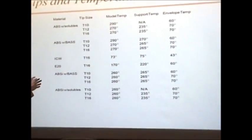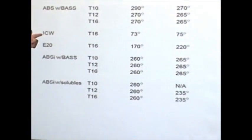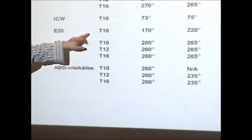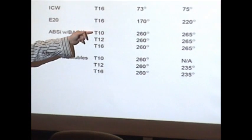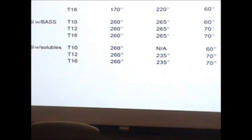And then you can actually kind of see, for the wax, you can only use T16s. For the elastomer, you can only use T16s. But if you start looking at the ABSI, once again, you can use 10, 12, and 16 thousandths tips. So you can kind of study over this table a little bit.